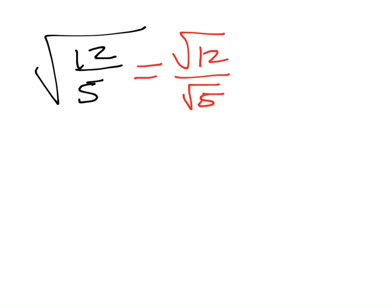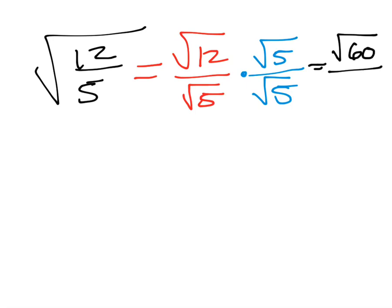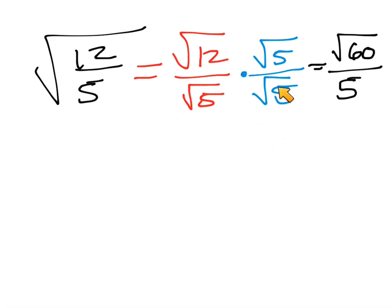To get rid of the square root in the denominator, we call it rationalizing the denominator. We always multiply by the denominator divided by itself. So we rationalize it — multiply by the denominator over itself. The top part is going to be square root of 60 (12 times 5), the bottom part is going to be square root of 25, which itself is 5. You'll start to notice that any time you take a square root times itself you always get that number without the square root — square root of 7 times square root of 7 equals 7, square root of 1,000 times square root of 1,000 equals 1,000.